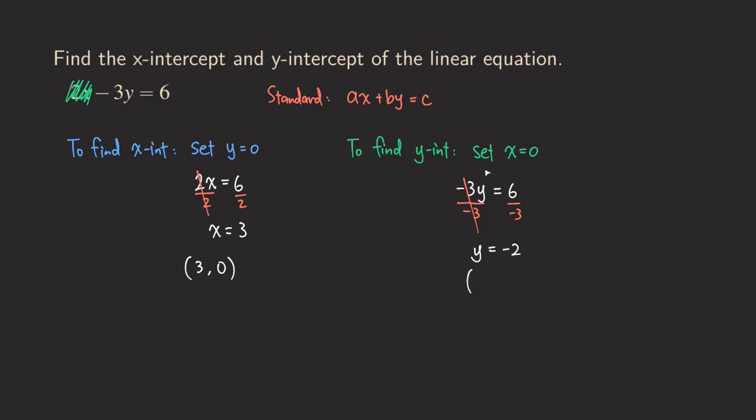So the answer would be, the y-intercept would be, we put the x value first, so x equals 0, and then y equals negative 2. So now we have the y-intercept at (0, -2).